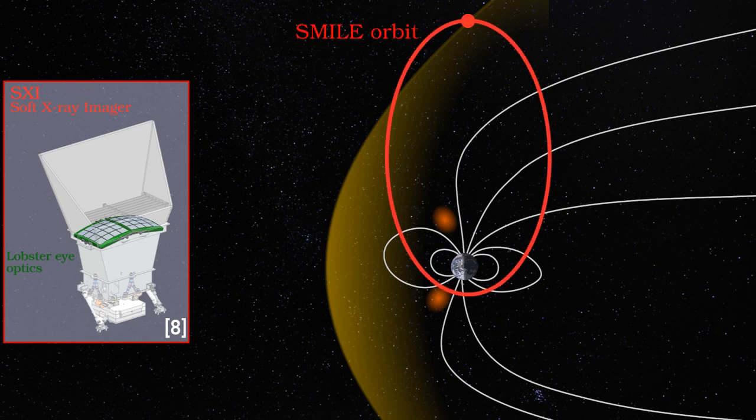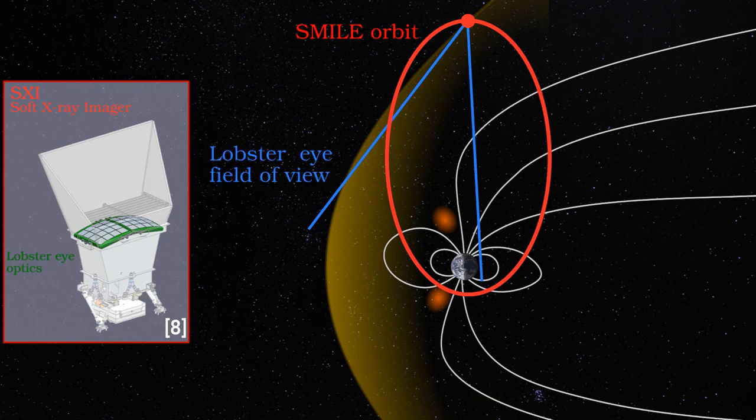The satellite will orbit in a highly elliptical manner, allowing it to spend a long time observing the Earth and its magnetosphere from a distance. The large field of view available to a lobster-eye optic will allow the very large regions of plasma to be imaged at once.